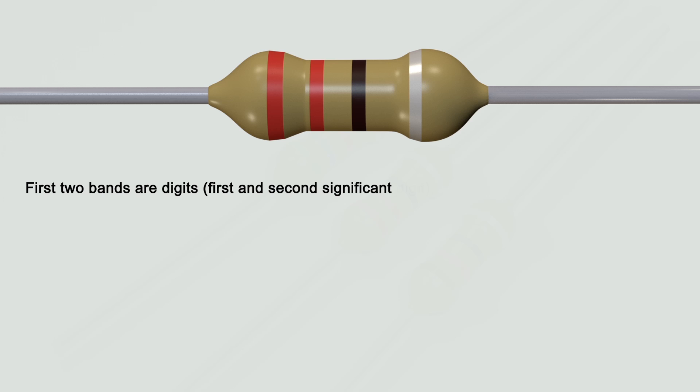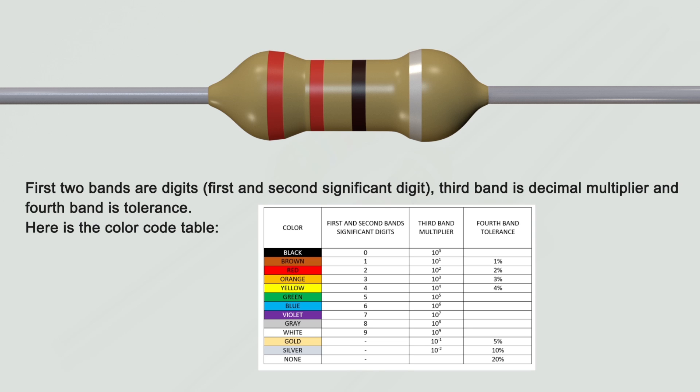First two bands are digits, first and second significant digit. Third band is decimal multiplier and fourth band is tolerance.